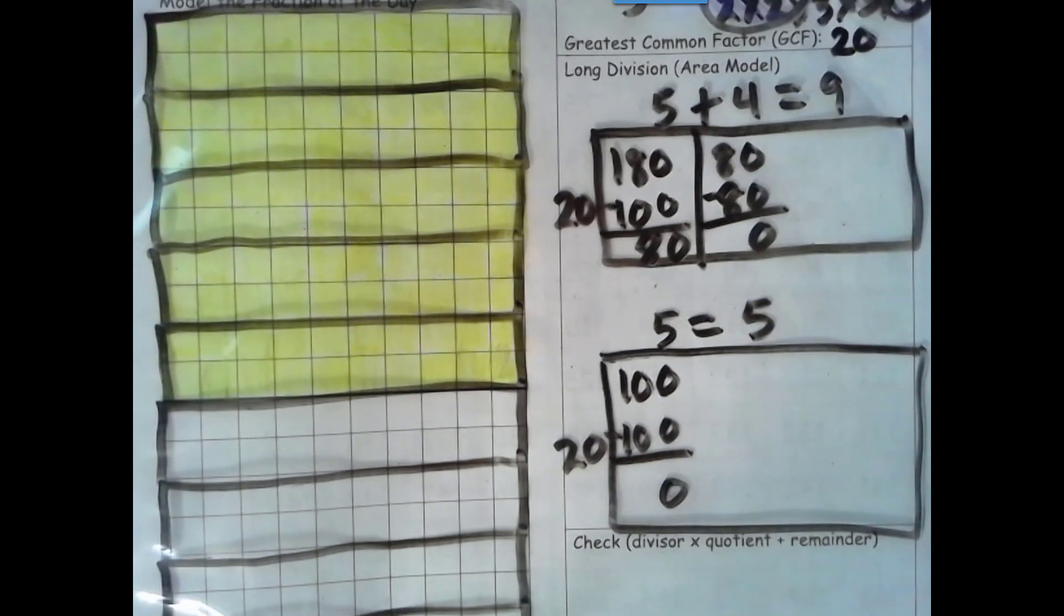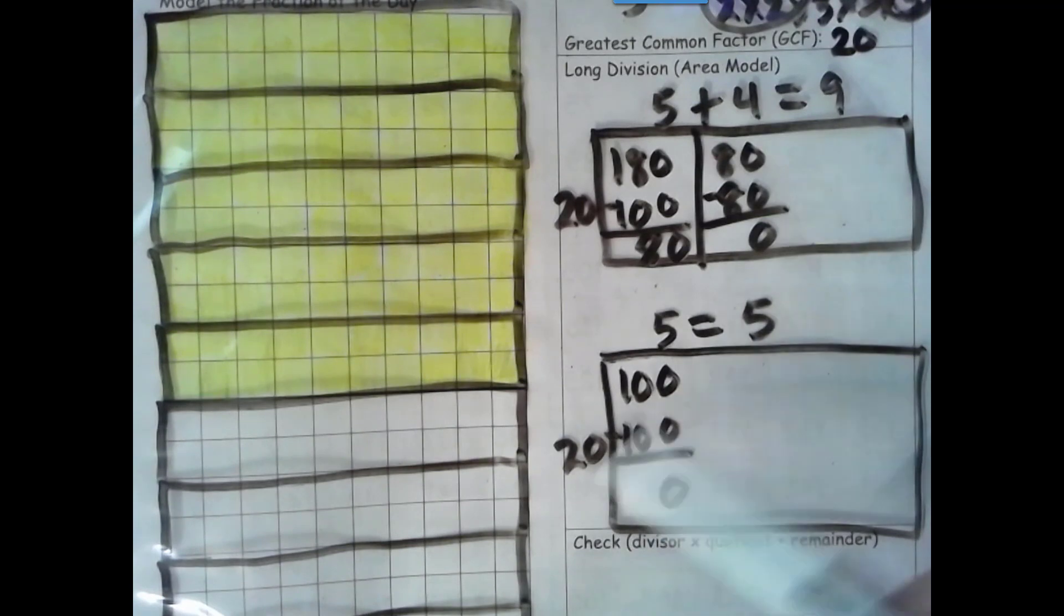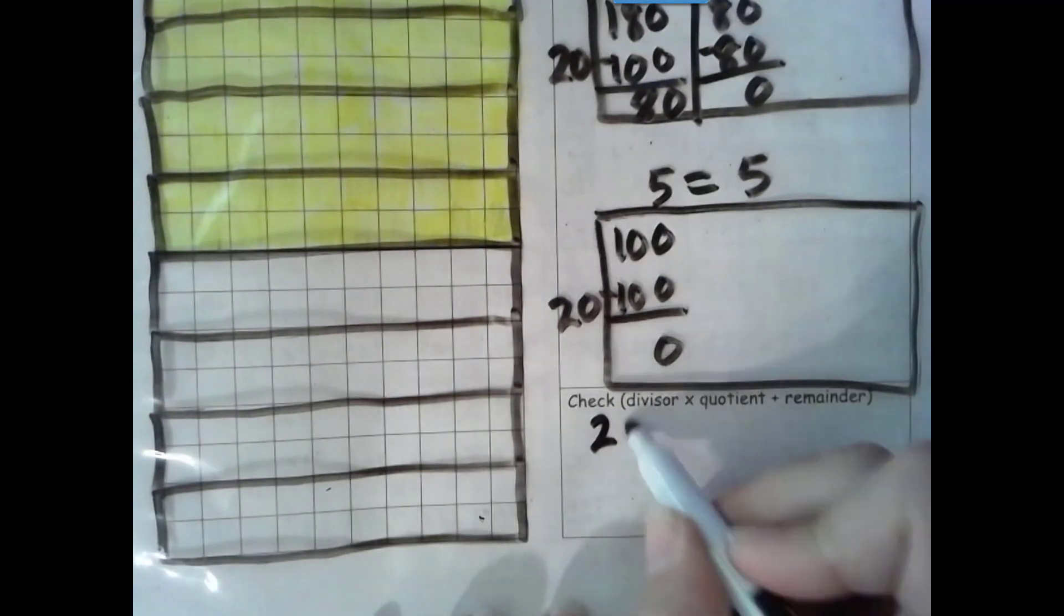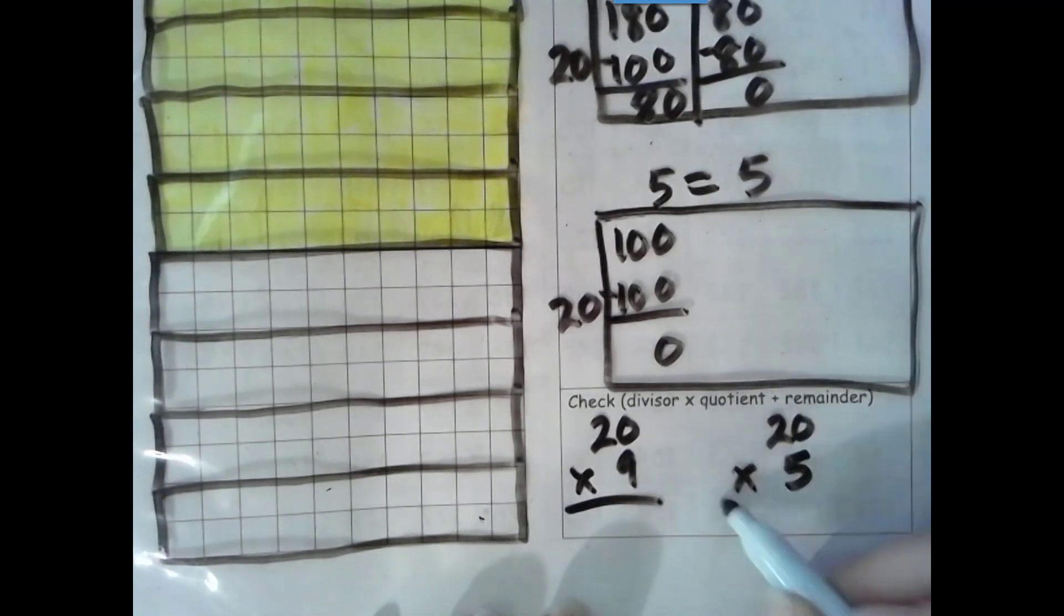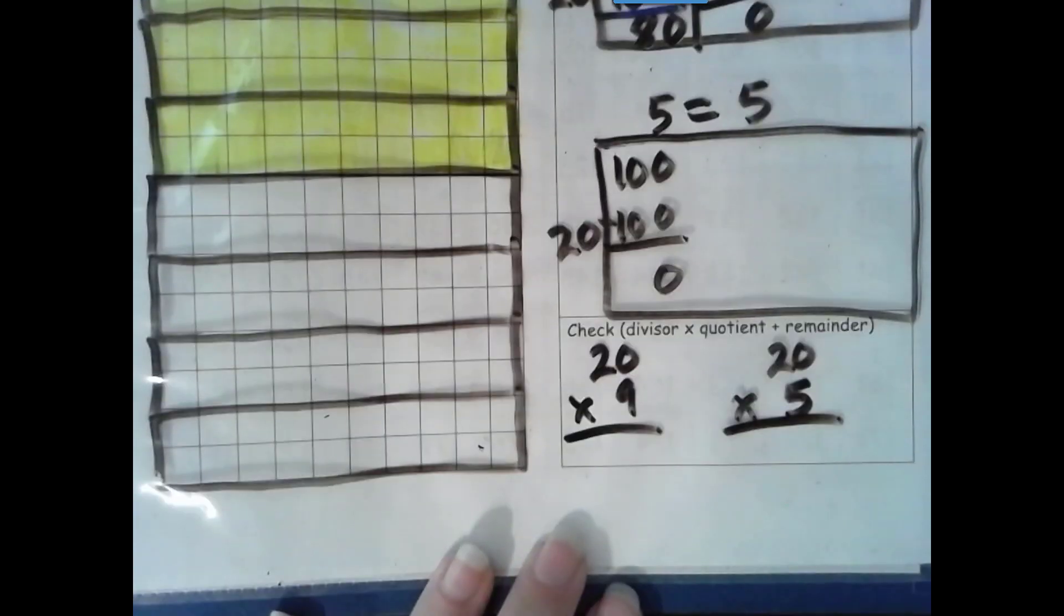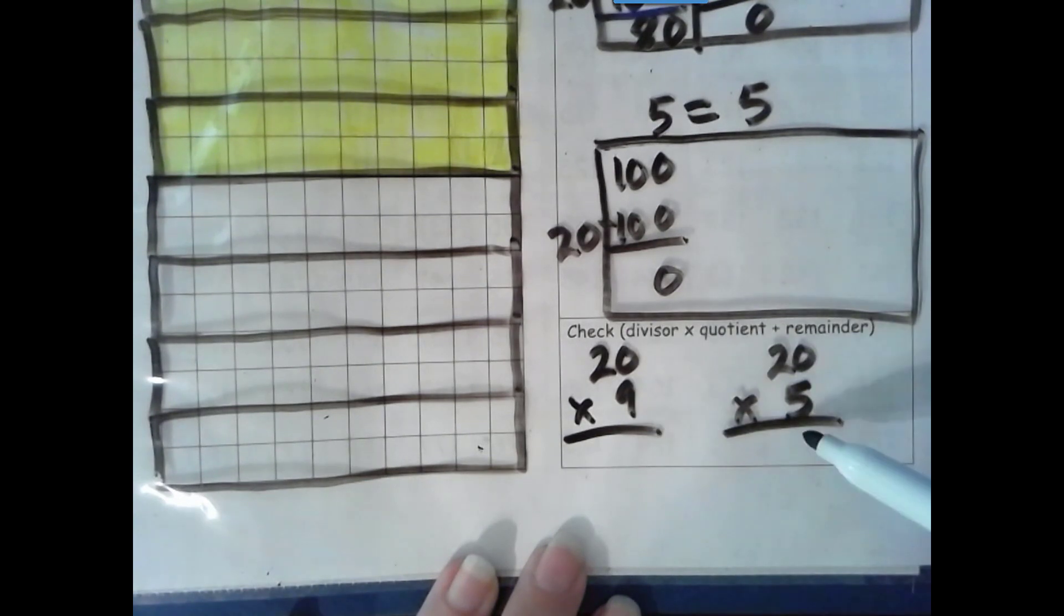Now we need to still check with our inverse operation. Divisor times quotient plus remainder. Now since our remainder is 0 for both, and the identity property of addition says when you add 0 it stays the same, I don't need to add the 0. And here instead of writing 9 times 20 and 5 times 20 I can use that commutative property to put the single digit as the multiplier. And it still is going to be the same.